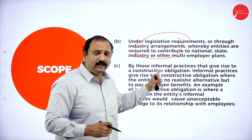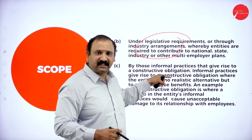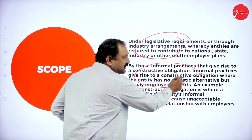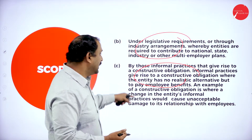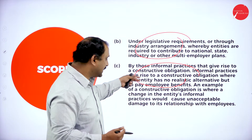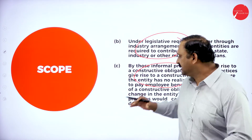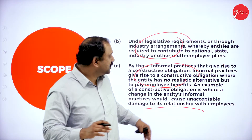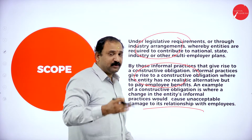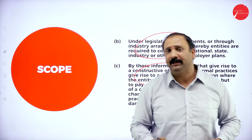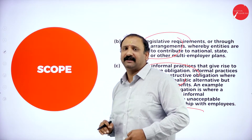This is very important because all these arrangements will be monitored under the accounting section — by those informal practices that give rise to constructive obligations where the entity has no realistic alternative other than to pay the employee benefits. A constructive obligation arises where a change in informal practices would cause unacceptable damage to the relationship with the employee. Any act leading to an informal situation will lead to unacceptable behavior and a rift between employer and employee. That is why it is mandatory for the employer to credit all benefits and work according to the formal agreement.